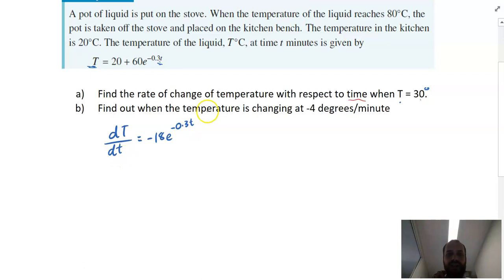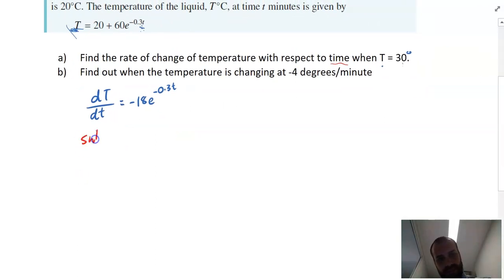So I should be able to use my rate of change formula to find out the rate of change of temperature with respect to time when capital T is equal to 30. That's a problem because my rate of change formula doesn't have capital T in it. It only has time, not temperature. So I need to know what the time is when the temperature is equal to 30. To do that, I'm going to have to sub 30 into the original equation to find out the time.